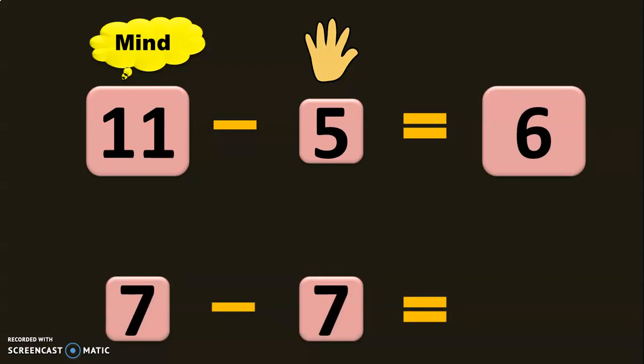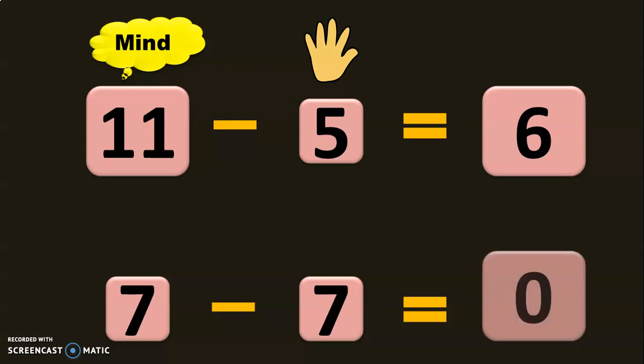7 minus 7. From the properties of subtraction, we know that when a number is subtracted from itself, you will get the answer 0. So the answer for 7 minus 7 is equal to 0.